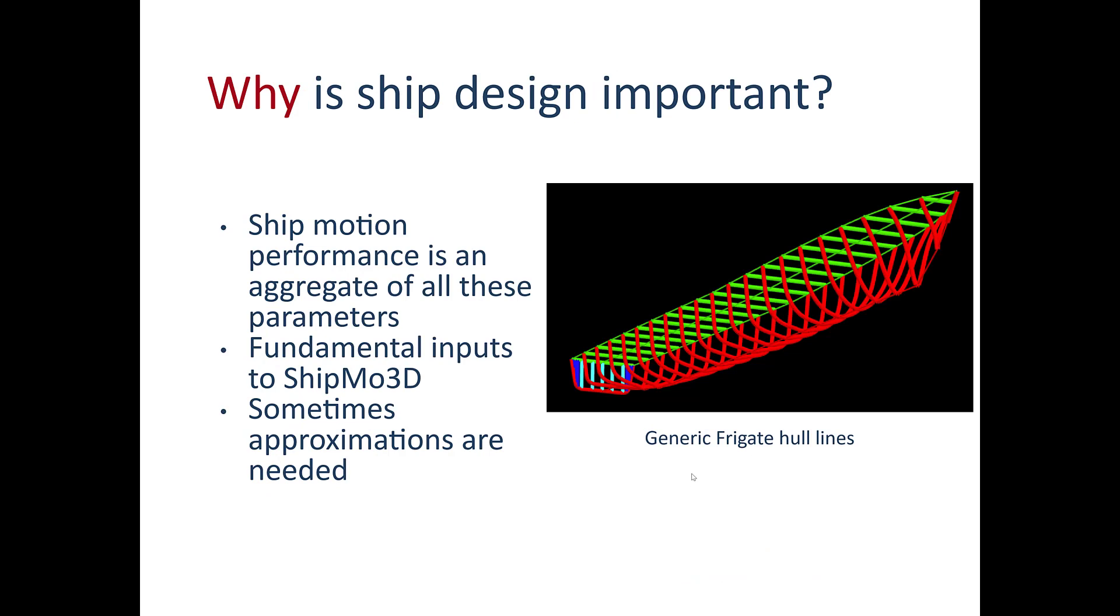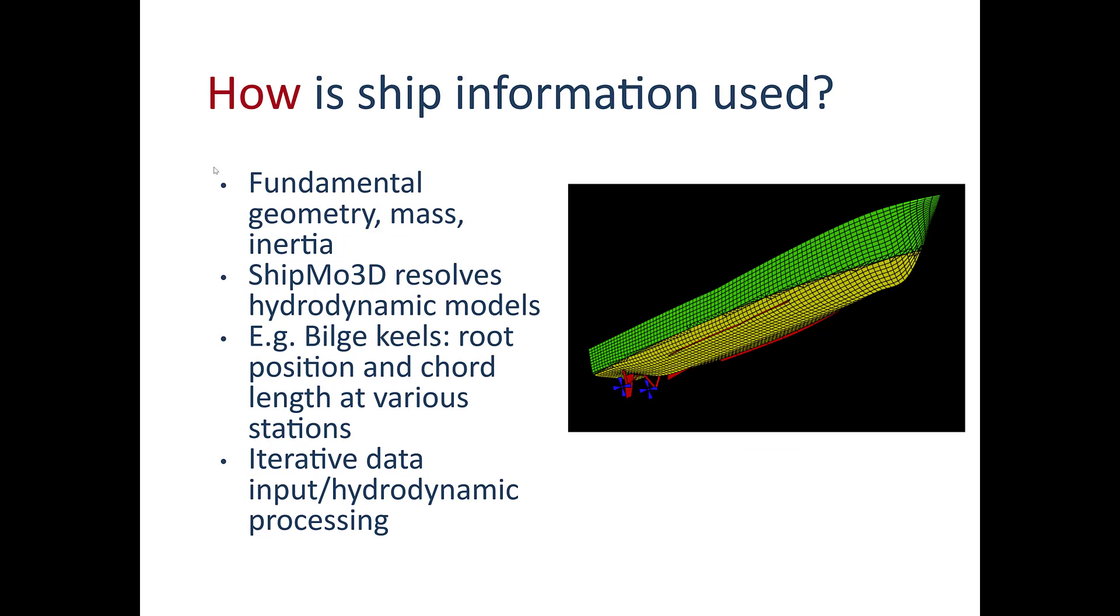Why is ship design important? This is crucial for getting an accurate picture of the ship motion performance. It's an aggregate effect of all of these parameters together. And, of course, they're very fundamental inputs to Shipmo3D. If you don't have the information, you have to find a way to make approximations in some cases. This is an example of what hull lines look like described at different stations for the generic frigate project in Shipmo3D. Fundamental properties like geometry, mass, and inertia are crucial to get and a key part of ship information.